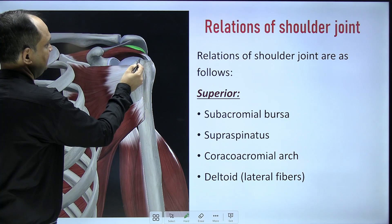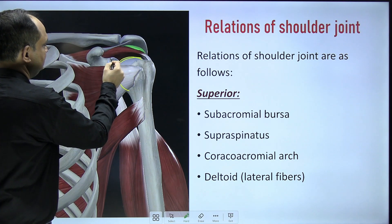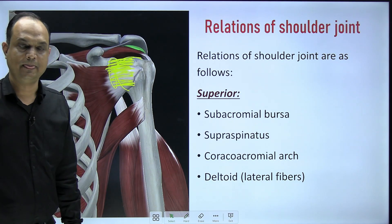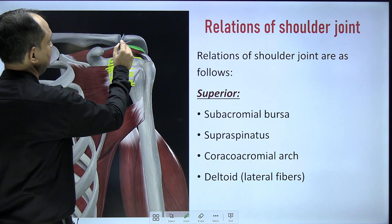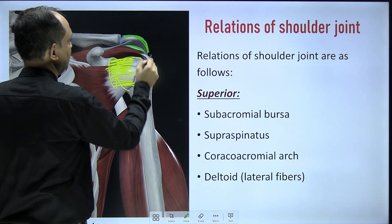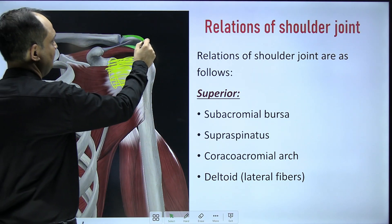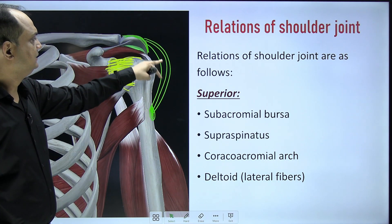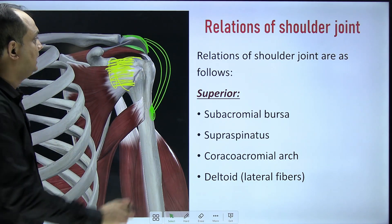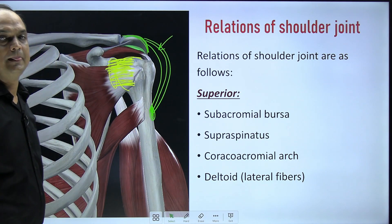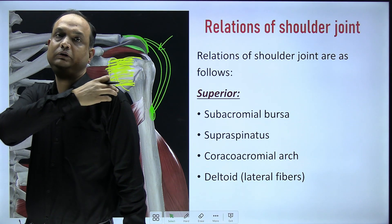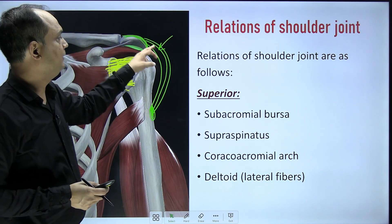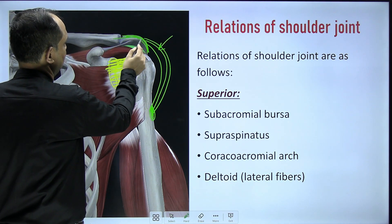For the superior relations, this is the head of the humerus and this is the glenoid cavity — that is your shoulder joint. Superior to the joint, the first important structure is the acromion process, which gives rise to the deltoid muscle. The deltoid fibers insert on the deltoid tuberosity of the humerus. The deltoid is the most superficial structure; when you want to see the shoulder joint in dissection, you have to cut the deltoid muscle because the shoulder joint lies deep to it.